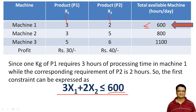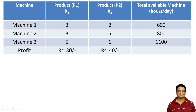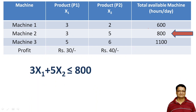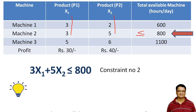Now let us move to constraint number 2, which is related to machine 2. We can express constraint 2 as: 3x1 + 5x2 ≤ 800, since machine 2 is available for only 800 hours. This becomes constraint number 2.